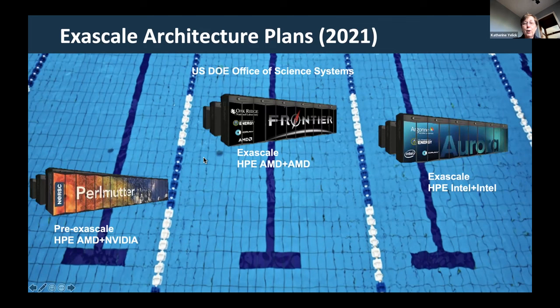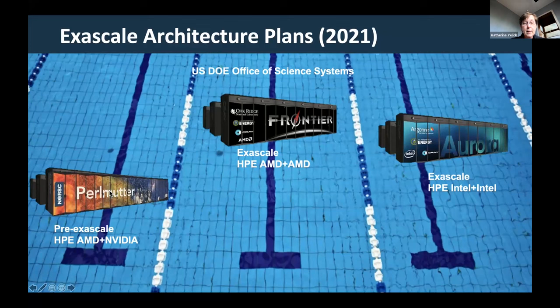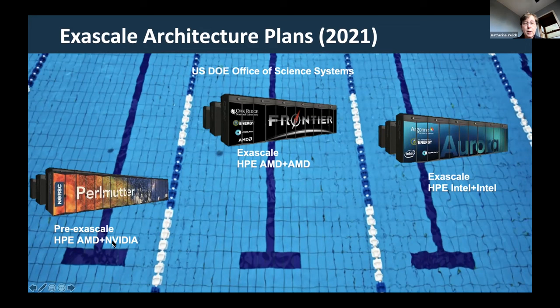Today, all three of the major Office of Science systems coming online are using GPU architectures — massively parallel machines. All use a network from HPE (formerly designed by Cray). The GPUs are all different architectures: the Perlmutter system at NERSC is a pre-exascale system with NVIDIA GPUs, while Frontier and Aurora will use AMD and Intel GPUs respectively. Worrying about portability across these different GPU architectures is one of the challenges in this project.